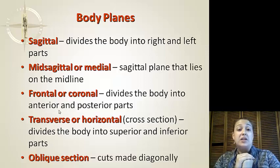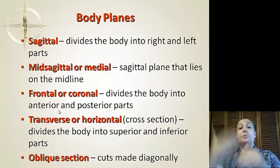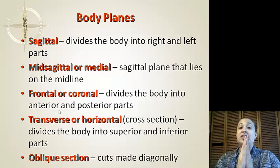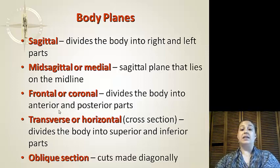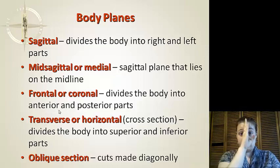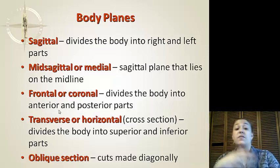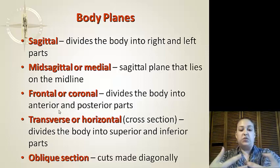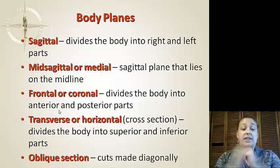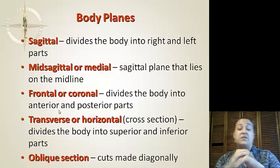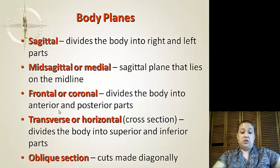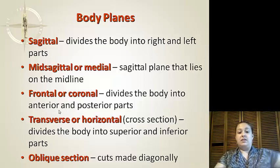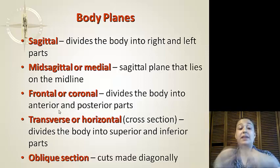So, body planes — we've got more terminology. We tend to cut things in half to see inside what's going on. The sagittal plane divides the body into right and left parts. The mid-sagittal, or medial, is the sagittal plane that lies on the midline — it actually cuts you right in half. Next, we have the frontal, or coronal plane, which divides the body into anterior and posterior — front and back. The transverse, or horizontal, is a cross-section that divides the body into superior and inferior parts. Oblique planes tend to cut diagonally.